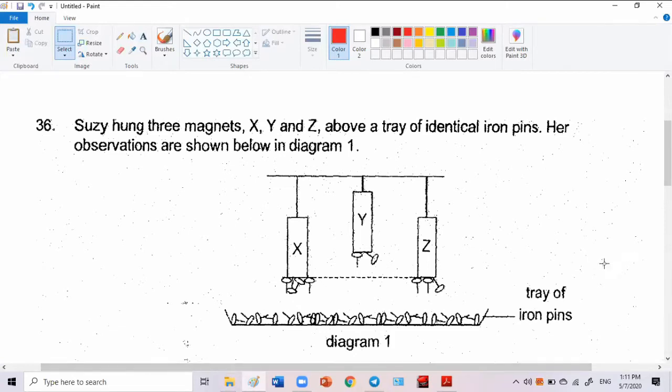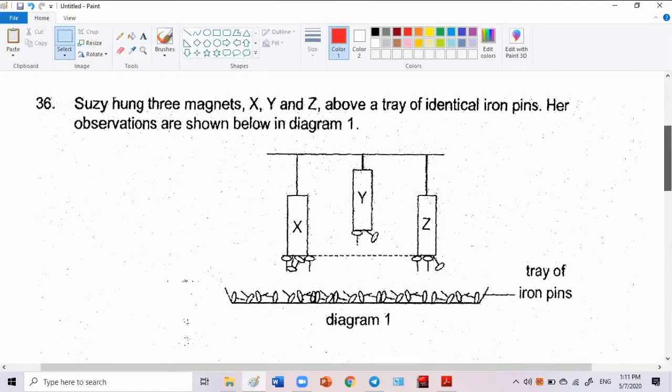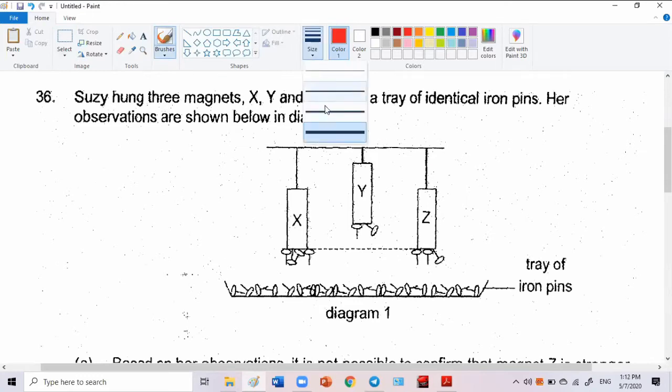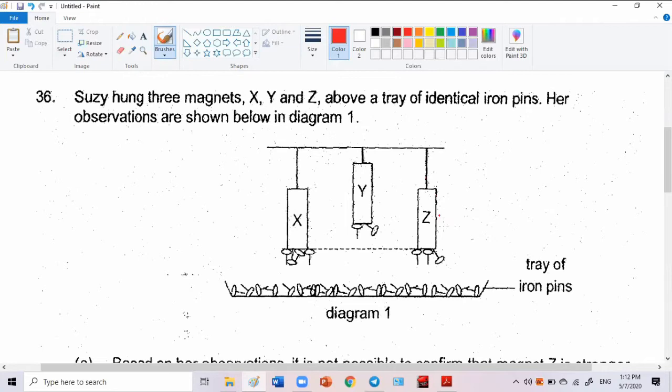Suzy hung three magnets X, Y, Z in the above tray for identical iron pins. Observation is shown below in the diagram. Alright, you look at Z, how many pins did it take? Three pins, right? Here, two pins. Can you see? Here, one, two, three, four pins. Can you see?